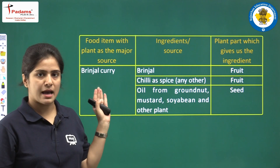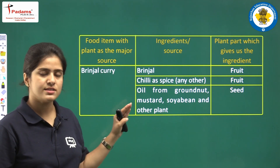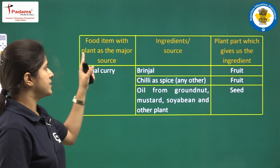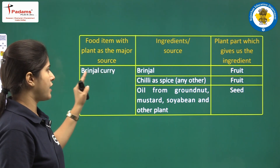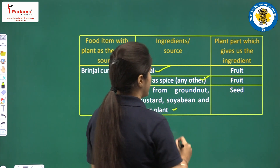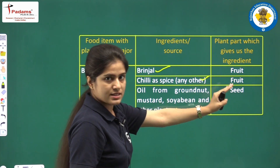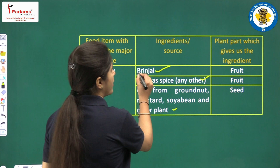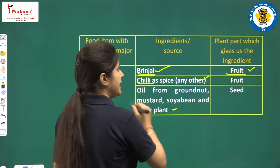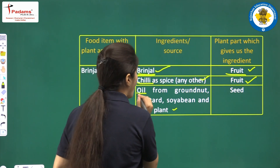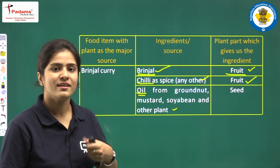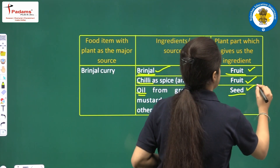Now we will discuss an example. We are given a dish — brinjal curry, where plant is the major source. Ingredients required will be brinjal, chili as spice, and oil from groundnut, mustard, or soya bean plants. The plant parts used: brinjal is the fruit of the plant, chili as spice is also the fruit of the plant, and oil is derived from the seeds of the plants.